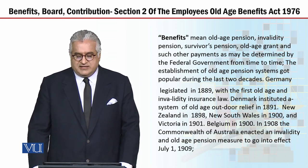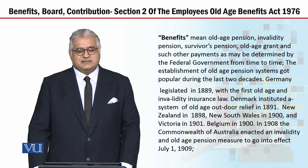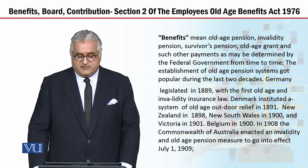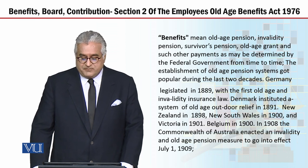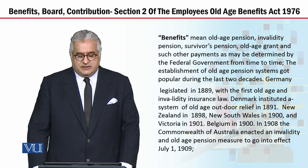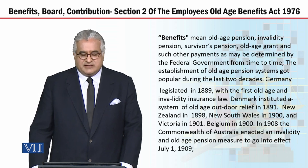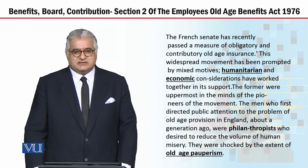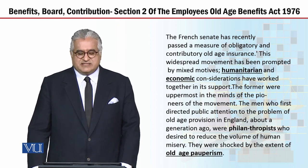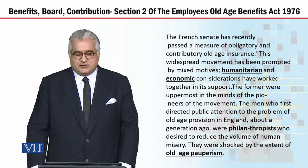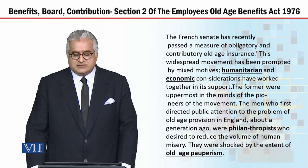The Commonwealth of Australia enacted invalidity and old age pension measures to go into effect by July 1, 1909. The French Senate also recently passed a measure of obligatory and contributory old age insurance.